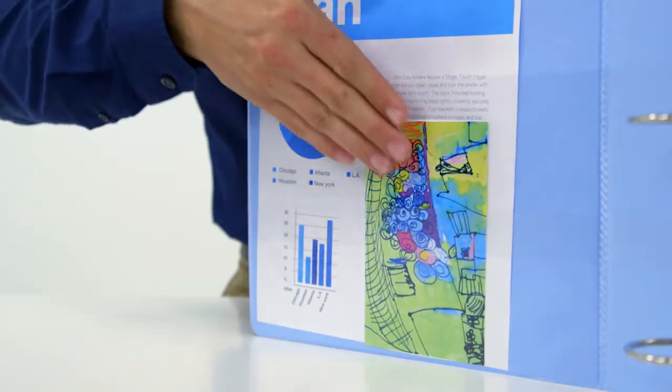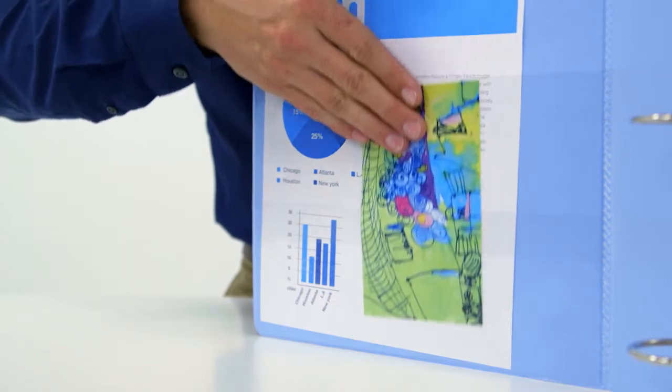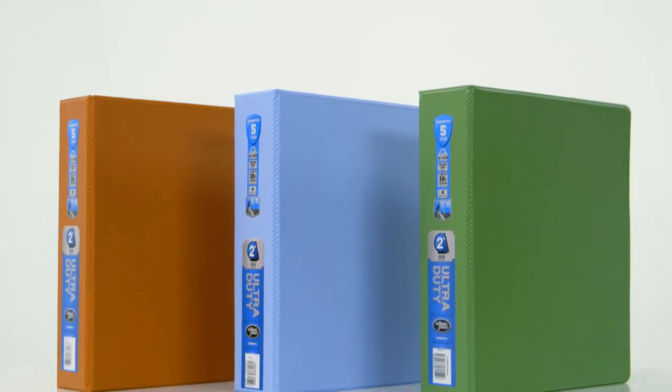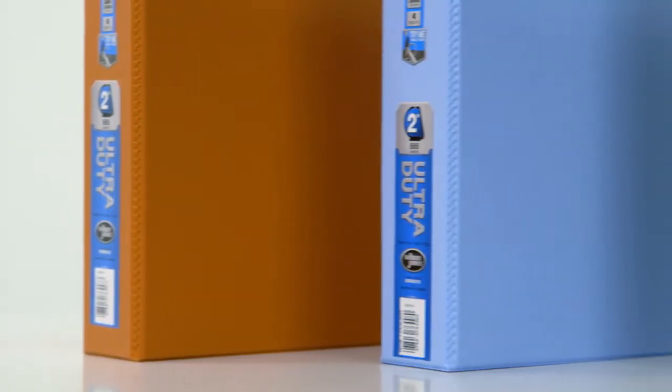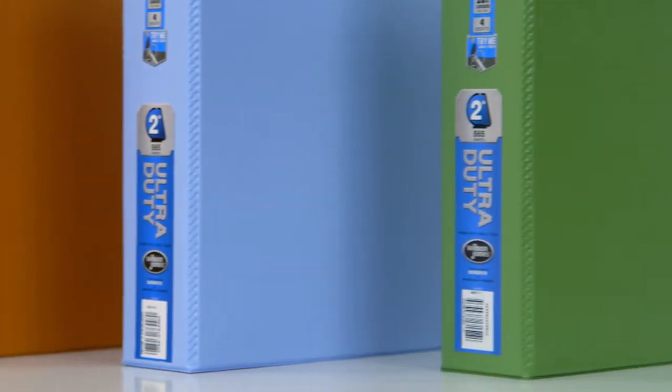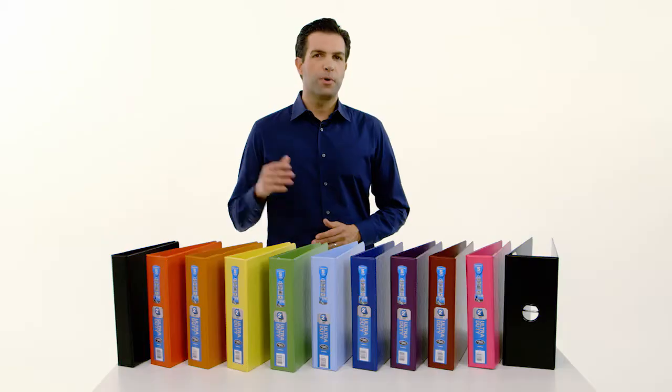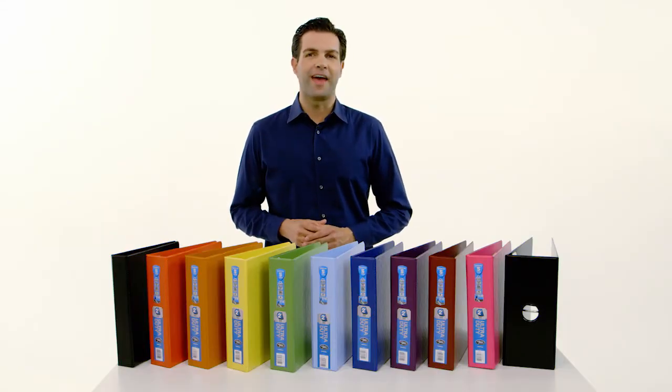Plus, there are four interior pockets that provide additional storage. Wilson Jones Ultra Duty Binders are available in multiple colors and ring sizes. Backed by the five-year guarantee, this binder will meet your most demanding needs. Purchase your Wilson Jones Ultra Duty Binders today.